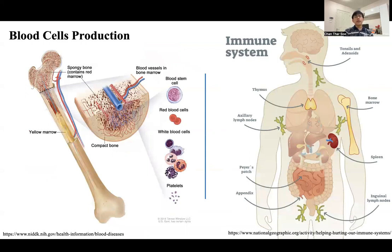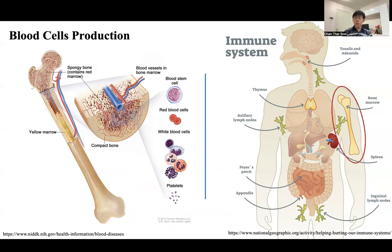How are blood immune cells produced? In our bones, we have yellow bone marrow contained at the center of the femur. In the other part of the femur, we have the spongy bone, which contains the red bone marrow. In the red bone marrow, there is blood flow. In the spongy area, there are small poles where red blood cells and white blood cells are generated. So white blood cells are produced from the bones — that's why we call it the bone marrow immune system.